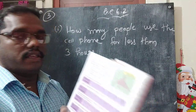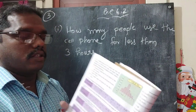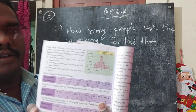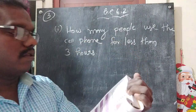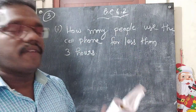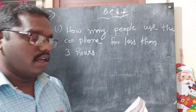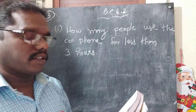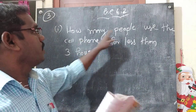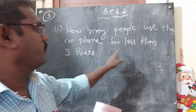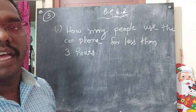Look at the book. The first question they are asking us: how many people use the cell phone for less than three hours?